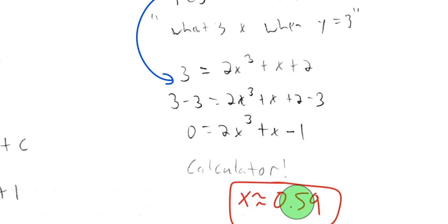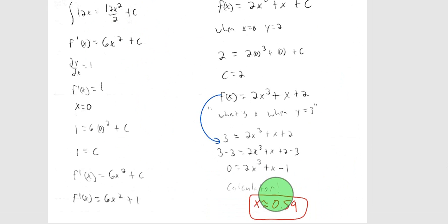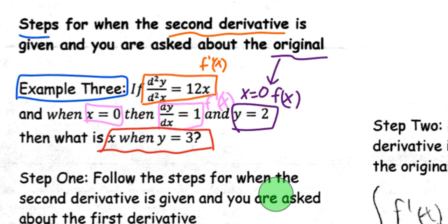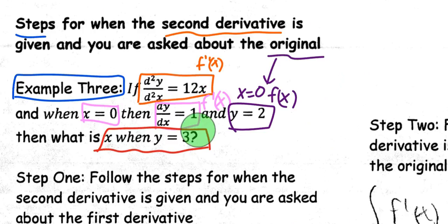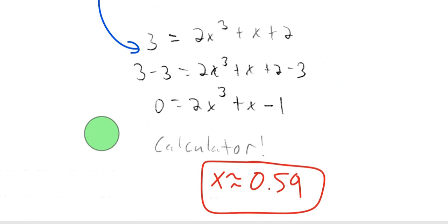Therefore, x is approximately equal to 0.59. That solves our problem because that's what the question was asking — what is x when y is 3? Basically, you'd have a point on the graph of f of x equals 2x cubed plus x plus 2: the point would be (0.59, 3). They gave us the y value and we had to find the x value. We were given the second derivative and a few points — one for the first derivative and one for the original — and we were asked to solve for x when y is 3. To do that, we found the first derivative and the original, and finally found the x value. That's it for this example.